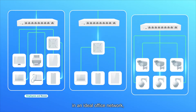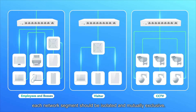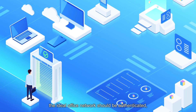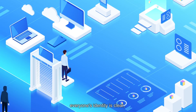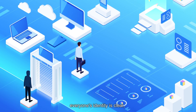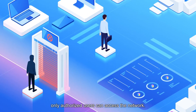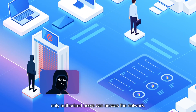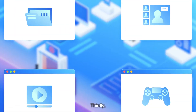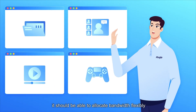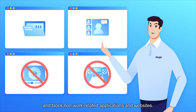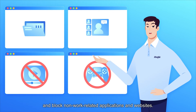What's an ideal office network like? Firstly, in an ideal office network, each network segment should be isolated and mutually exclusive. Secondly, the ideal office network should be authenticated — everyone's identity is clear, and only authorized users can access the network. Thirdly, it should be able to allocate bandwidth flexibly and block non-work-related applications and websites.